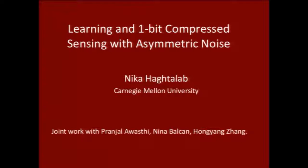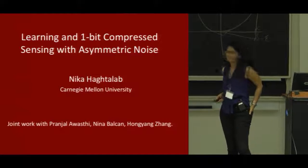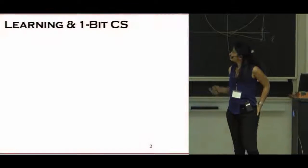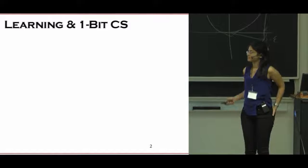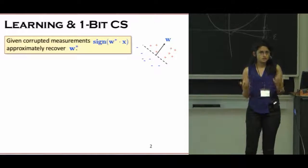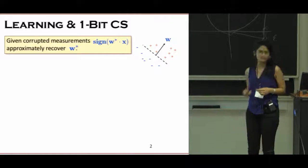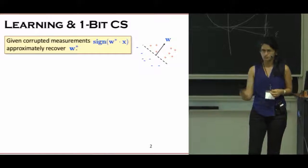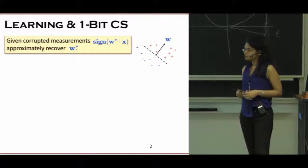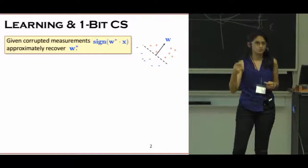Hi, I'm Niko Hak-Taleb, and this is joint work with Pranjal Abasti, Nina Balkin, and Hongyong Jang. In this work, we talk about a problem where we are given a signal W star that's unknown, and we have corrupted measurements in the form of sign of that signal with sample points drawn from a distribution. What we want to know is, can we approximately find that W star from these corrupted signs?